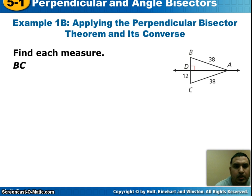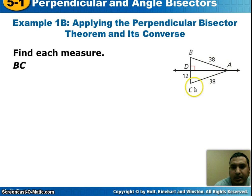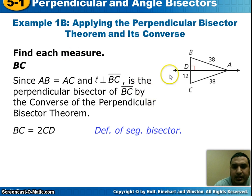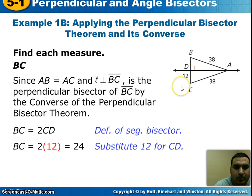Next example: looking at the picture, we need to find the distance from B to C. The distance from AB is 38, and the distance from AC is 38. And I know that AD is perpendicular to BC. That means BC is twice as big as CD. So if CD is 12, two times 12 gives me 24. So the length of BC is 24 units.